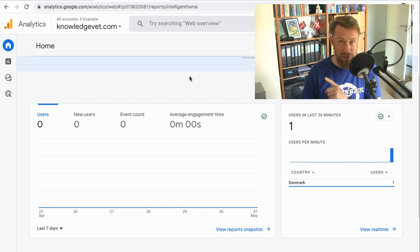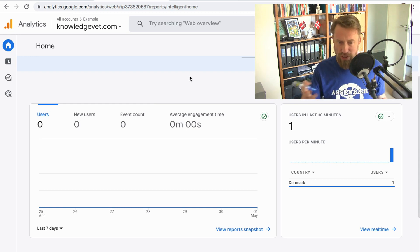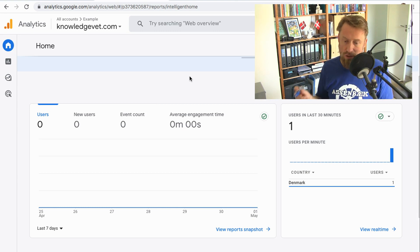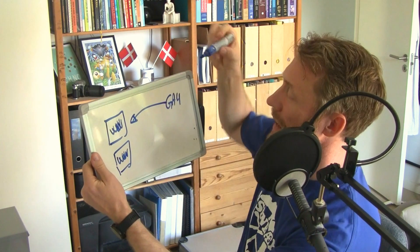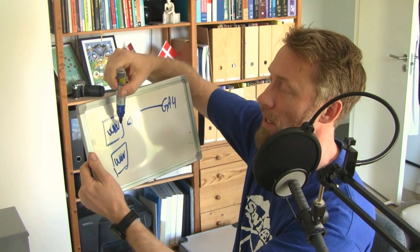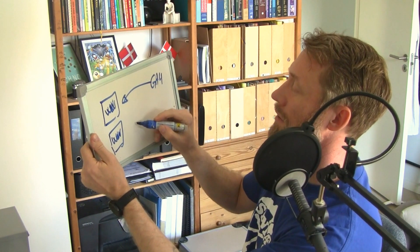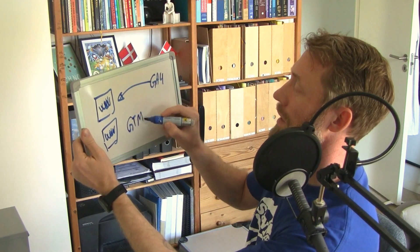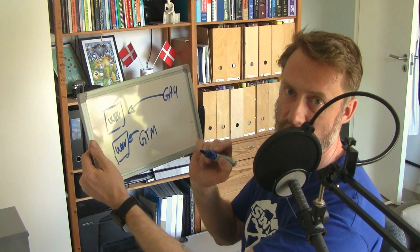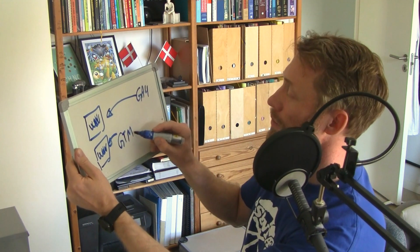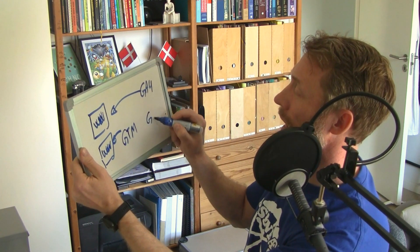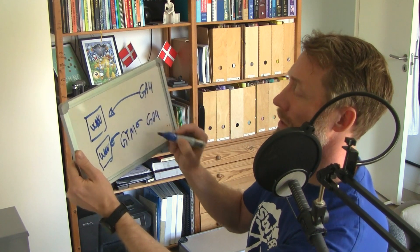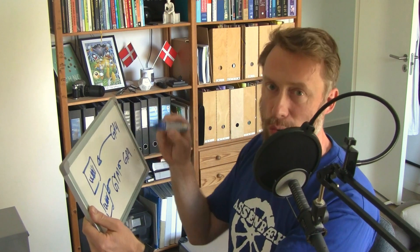I mentioned there was a more difficult way to do this. You might ask why you'd ever do it the harder way when it's this easy. But there is actually a good reason. What Google would have you do instead is add what's called Google Tag Manager directly into the website, and then add Google Analytics 4 into Google Tag Manager. That usually slows things down a bit.